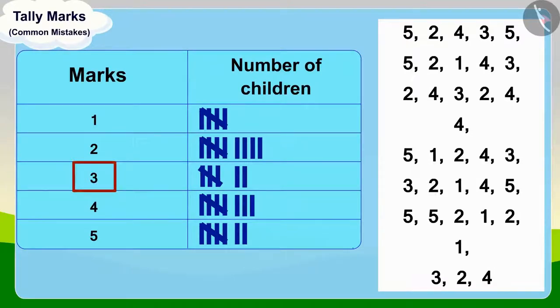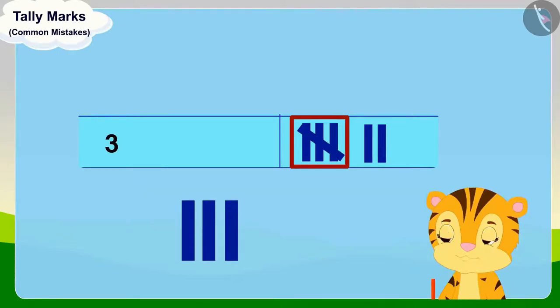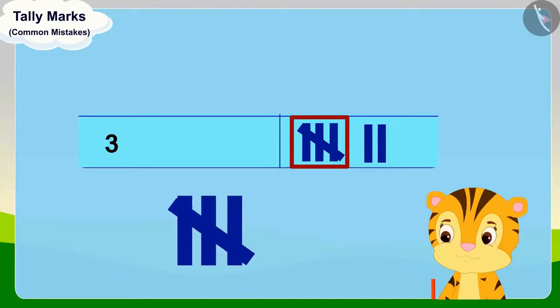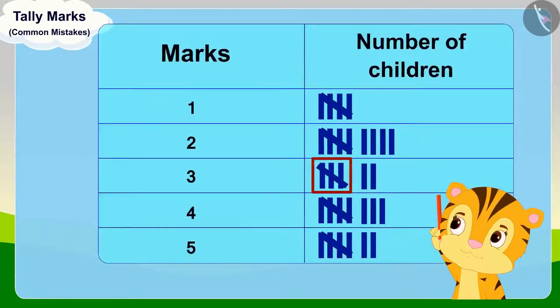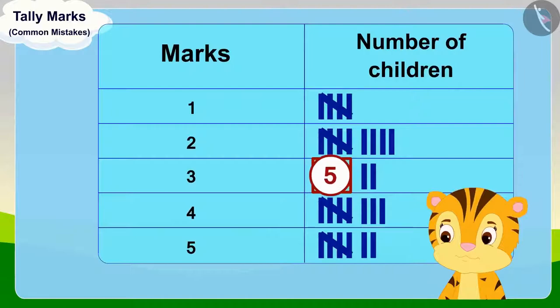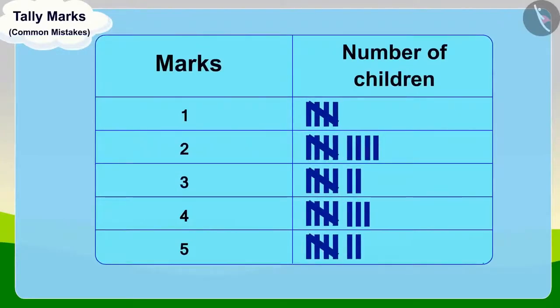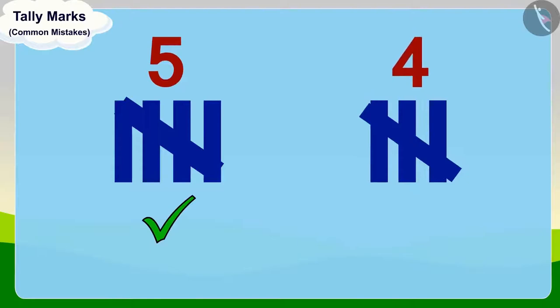For three marks, there should be one group of tally marks and one line. But Mrs. Khan has made one group and two lines for three marks. When she was making tally marks for three marks, she made only three vertical lines and one slanted line, giving only four lines in that group. While counting, she counted this as a group of five. Remember — while using tally marks, always draw five lines in a group.